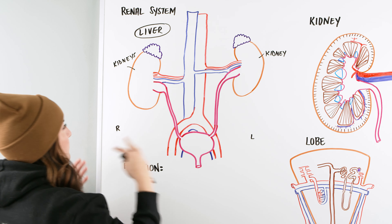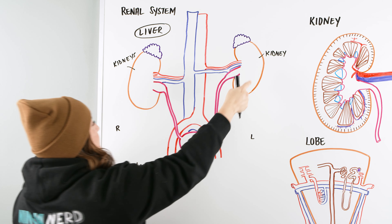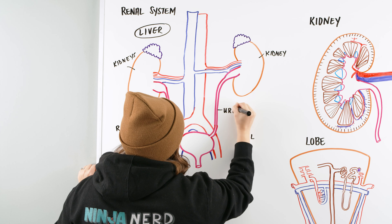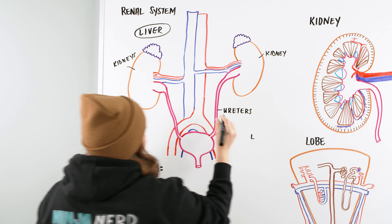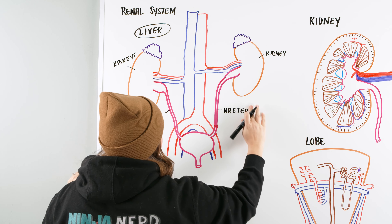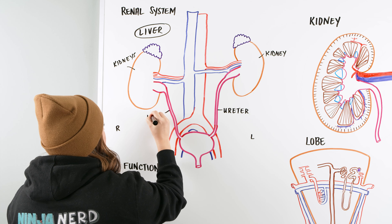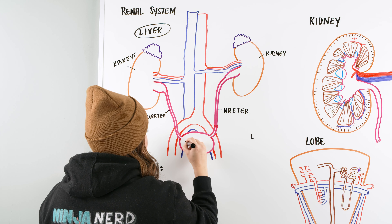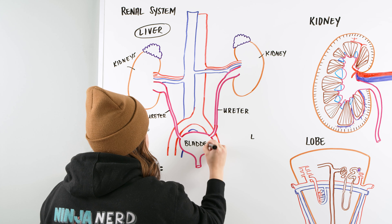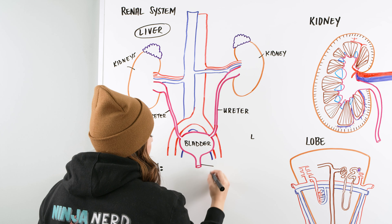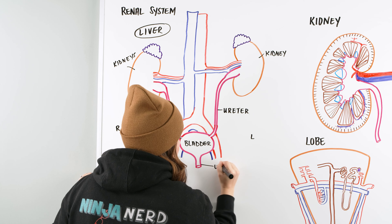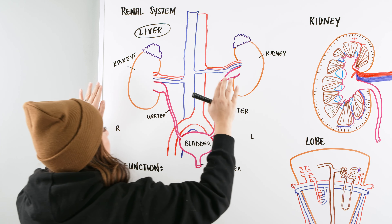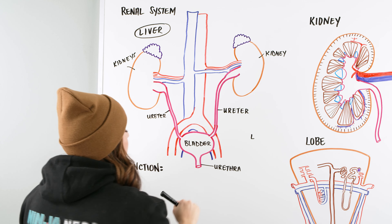So we have our kidneys — that's the biggest structure. As the kidneys drain urine, it goes into the ureters — one on each side. Urine then drains into the bladder, and from the bladder to the outside world through the urethra. So both kidneys drain into ureters, which go into the bladder and then out the urethra.